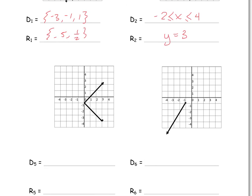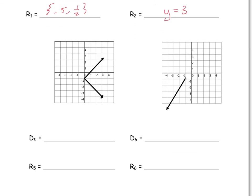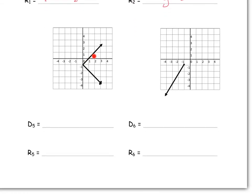Make sure it's clear: there is a point here, and an arrow at the end, which means this line continues to infinity. For the domain, the line continues, so there are X values from 0 all the way to infinity — X is greater than or equal to 0. For the range, the smallest value is negative 4, and all values above that exist — so Y is greater than or equal to negative 4.